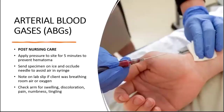For post-test care after taking your ABG sample: apply pressure to the site for five minutes to prevent hematoma formation. If the client is on anticoagulants, apply pressure for up to 15 minutes. Send your specimen on ice and occlude the needle to avoid air in the syringe. Note on the lab slip whether the client was on room air or on oxygen, and if on oxygen, document how many liters. Finally, check the arm for swelling, discoloration, pain, numbness, or tingling.